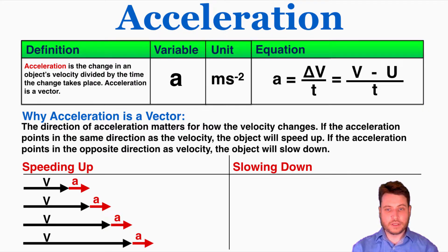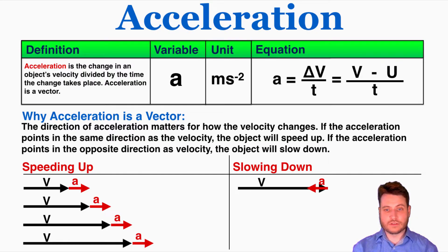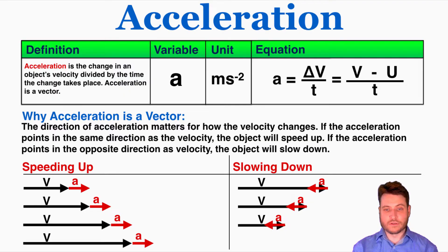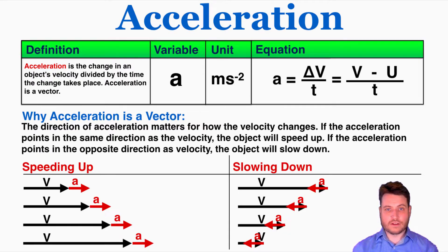Comparing this to slowing down: if an object is moving fast but slowing down, the change in velocity — connected tip to tail — works against the original velocity. If the object is moving to the right but slowing down, the acceleration must be pointing to the left to create the new, smaller velocity vector after one second. As that acceleration continues to apply, you can see that over time the velocity gets slower. So: same direction means speeding up, opposite direction means slowing down.